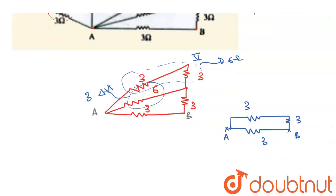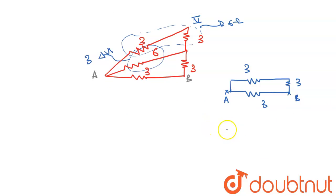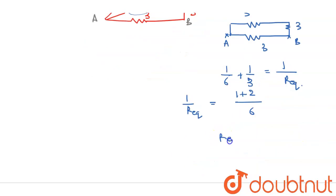So our equivalent will be one over six plus one over three is equals to one over R equivalent. From here one over R equivalent, this will be one plus two. And we can very clearly see that our R equivalent is equals to two ohms. Okay, this is our final answer.